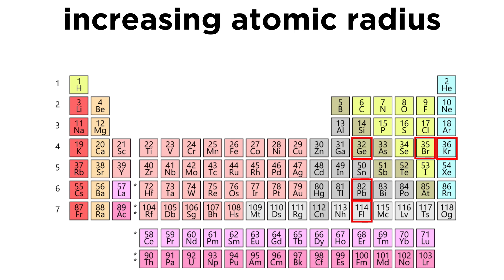Now we want to put them in order of increasing atomic radius. Atomic radius is going to increase as we go to the left. As we go to the left, there are fewer protons in each nucleus, and that means there is less of an electromagnetic attraction between the nucleus and the electrons. So the nucleus will not pull on the electrons as tightly, and the atoms will get slightly larger moving to the left on the periodic table.